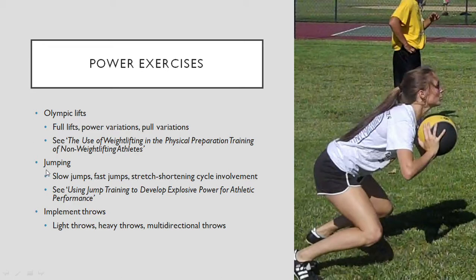Jumping is another category of power exercises we can use, and we can have slower jumps, fast jumps, and jumps that involve or don't involve the stretch shortening cycle. For more detail on jumping specifically, you can see the video on using jump training to develop explosive power for athletic performance on this channel. Another category we can use for power development is implement throws — medicine ball throws or other implements that we can throw safely — and we can do light, heavy, linear, and multi-directional type throws.